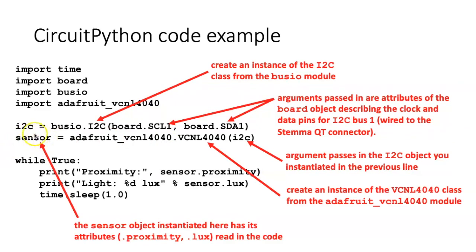Once I've created the instance of the sensor, then I can use the attributes of that sensor like proximity and lux in the code in order to find out what's happening in the sensor.